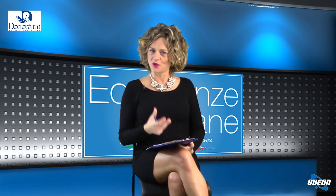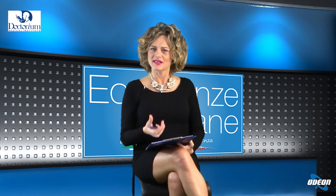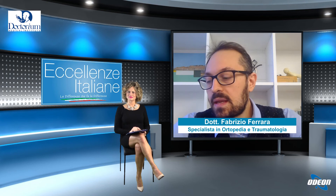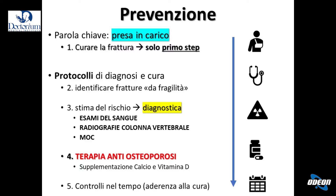Per quanto riguarda la prevenzione, cosa si può fare? La prevenzione è un aspetto molto importante. Quando ci si trova davanti a una frattura da fragilità bisogna prendere in carico il malato. Presa in carico è la parola chiave. Non dobbiamo limitarci a curare la frattura, ma dobbiamo seguire il paziente. Per questo sono nati dei protocolli: curiamo la frattura, poi il medico deve capire se quella che ha curato è una frattura da fragilità, e se la risposta è sì, sarà importante mettere in atto le indagini che identificano le cause della fragilità, quindi soprattutto l'osteoporosi.